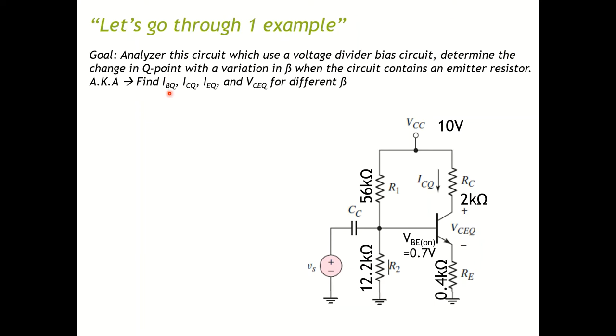In easier language to understand, when people say trying to find a Q-point, that means you find everything related to Q: base current at Q-point, collector current, emitter current, and the collector-emitter voltage.